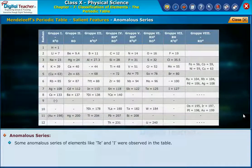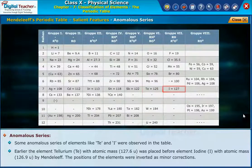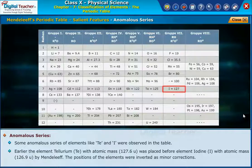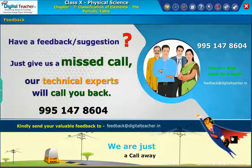Anomalous Series: Some anomalous series of elements, like Tellurium and Iodine, were observed in the table. Tellurium, with atomic mass 127.6 u, was placed before Iodine, with atomic mass 126.9 u, by Mendeleev. The positions of these elements were inverted as minor corrections.